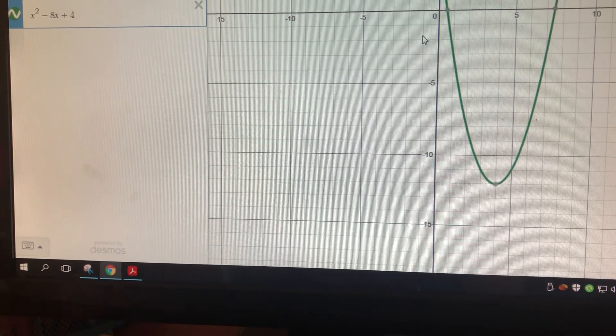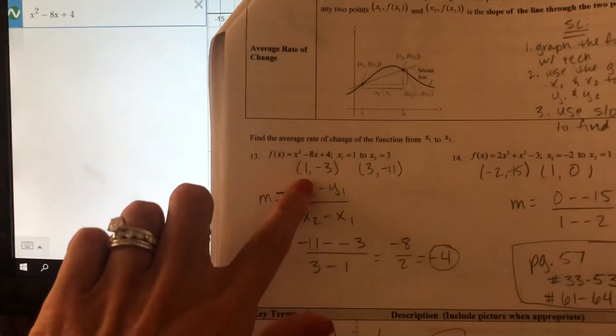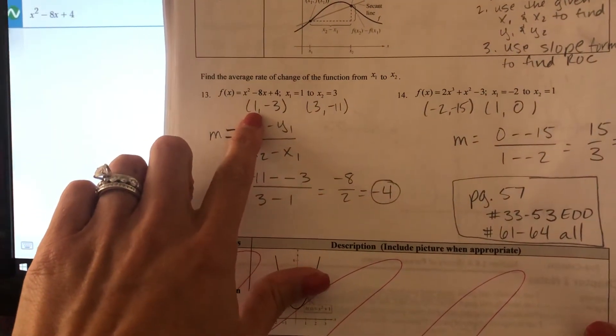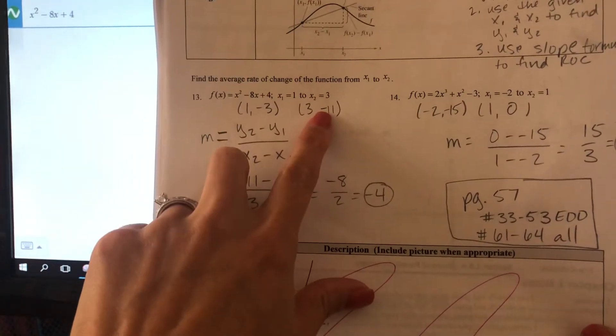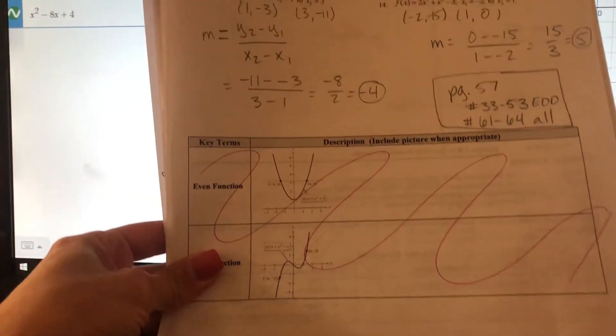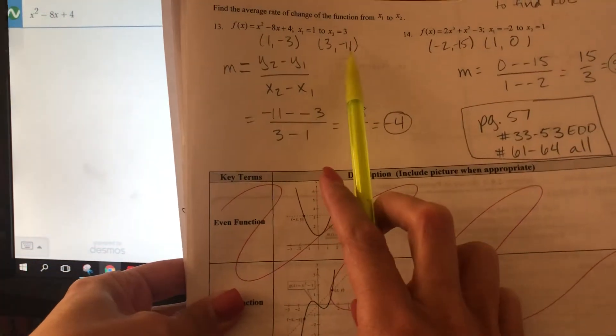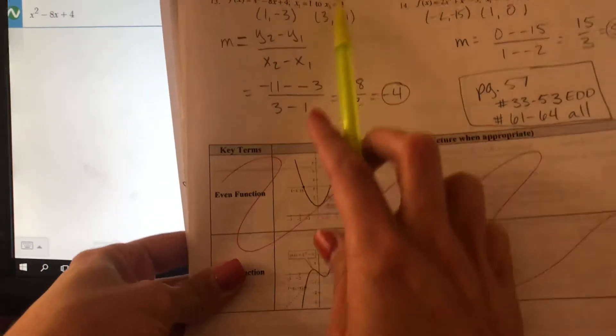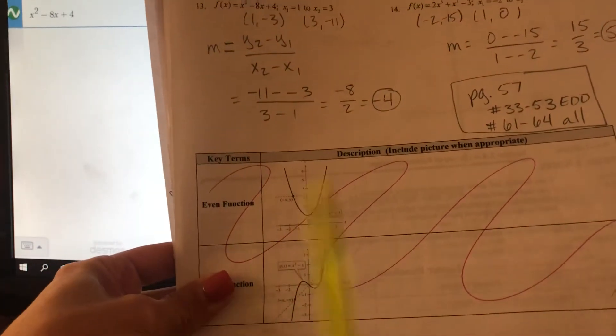So let me just show you the notes here. So 1, negative 3 is my first pair. And 3, negative 11 was my second. And then I'm just going to put that into the slope formula. And then I'll find the rate of change there. The y2 minus y1 over x2 minus x1. And then solve.